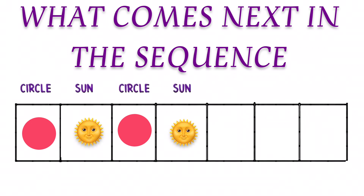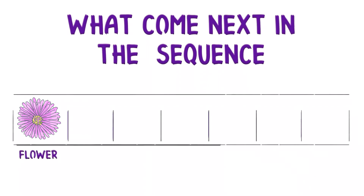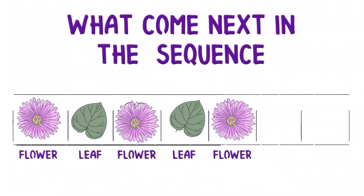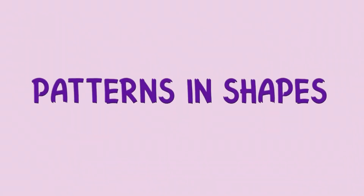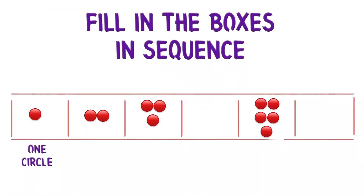What comes next in the sequence? Circle, Sun, circle, Sun — so what will be next? Circle, Sun. Circle, flower, leaf, flower, leaf — so what will be next? Flower, leaf.